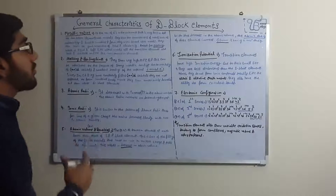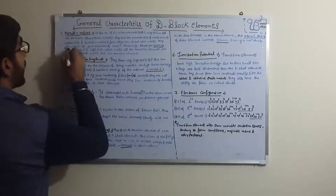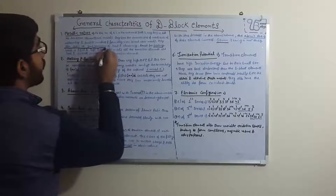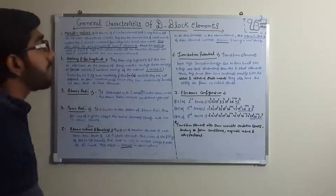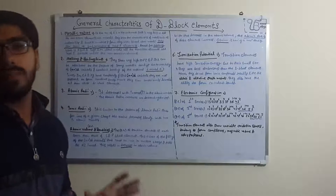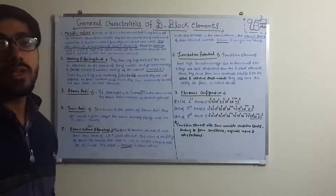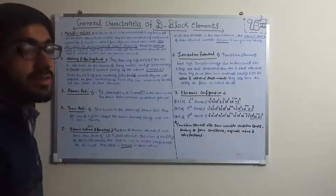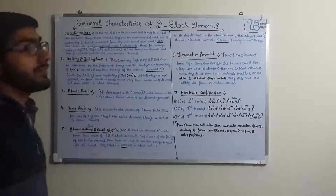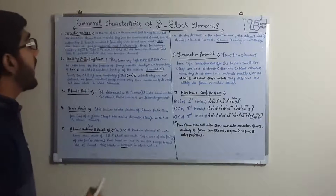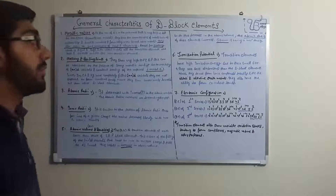They also serve as good conductors of heat and electricity — this point is very important. The exception here is mercury, because it is liquid and soft, unlike other transition elements which are hard and brittle. Mercury is the exception because it is liquid.